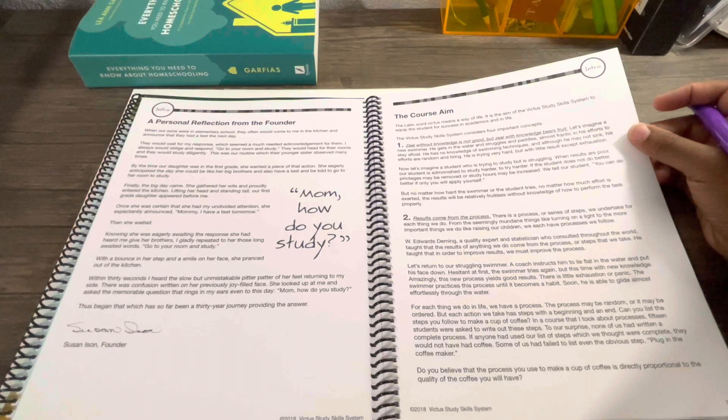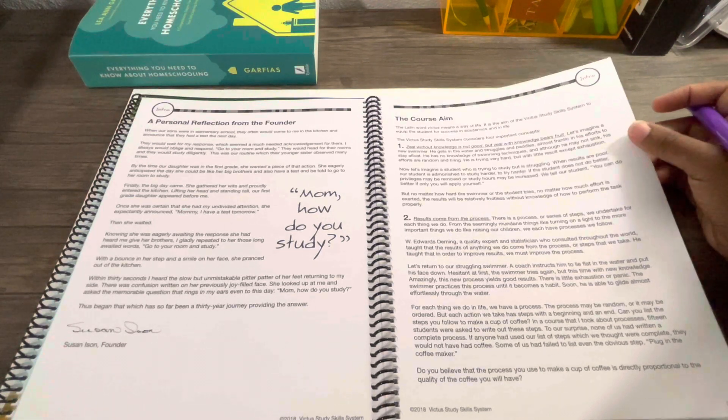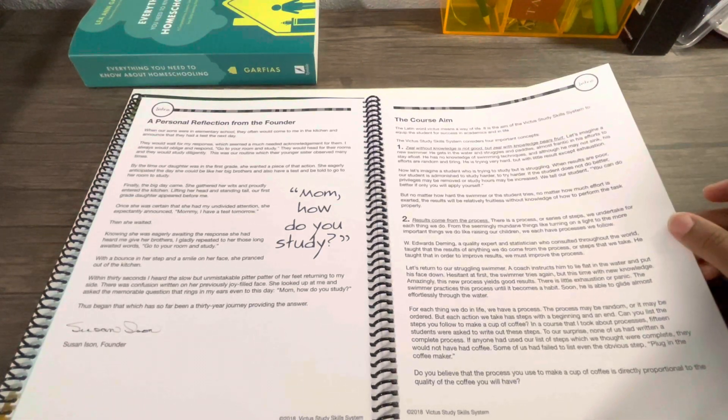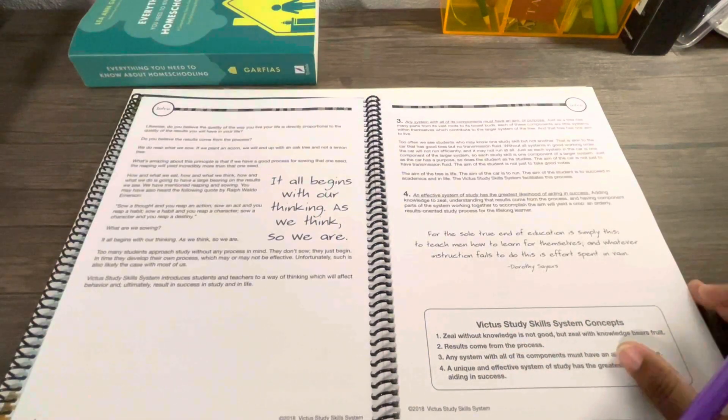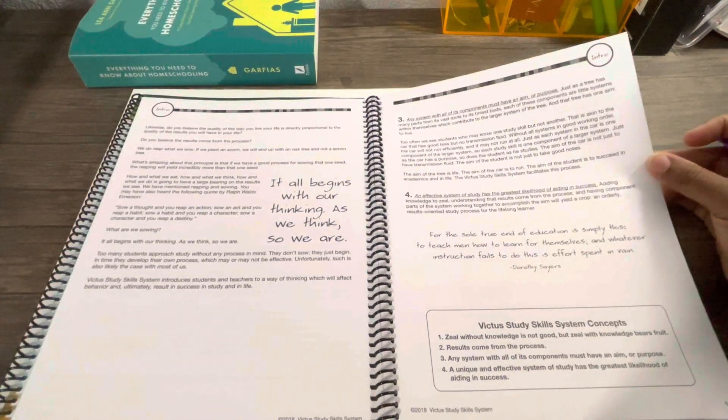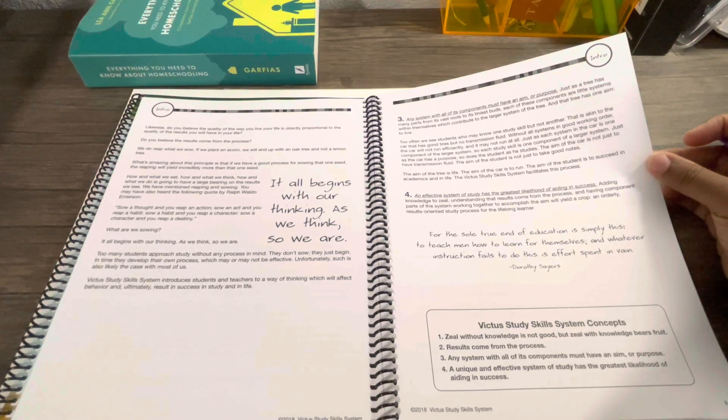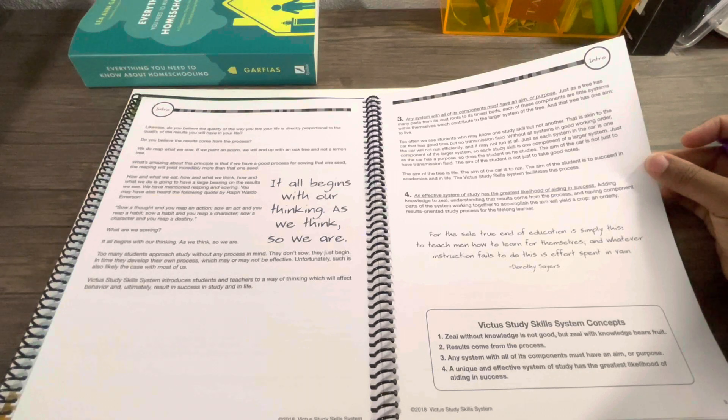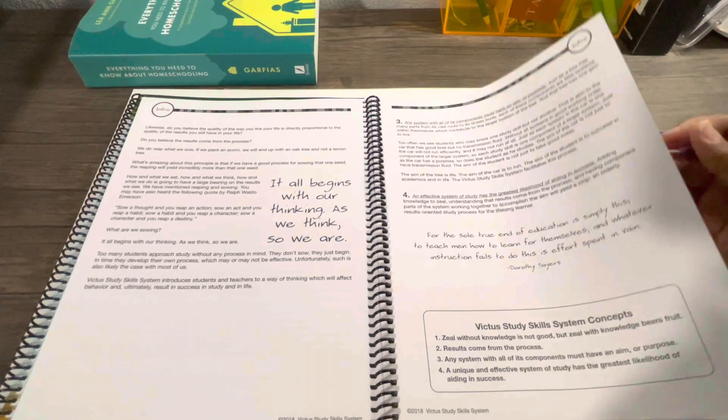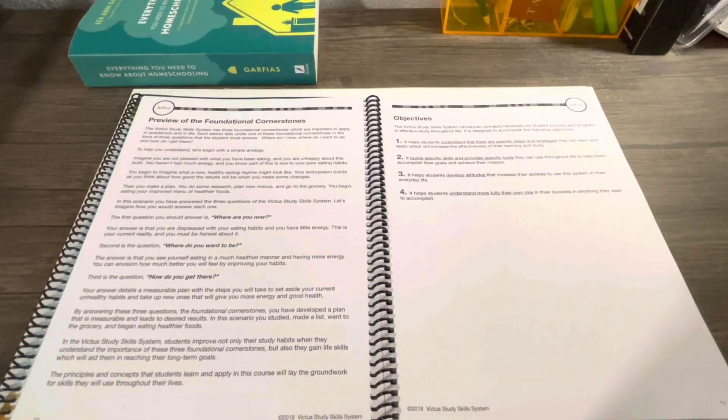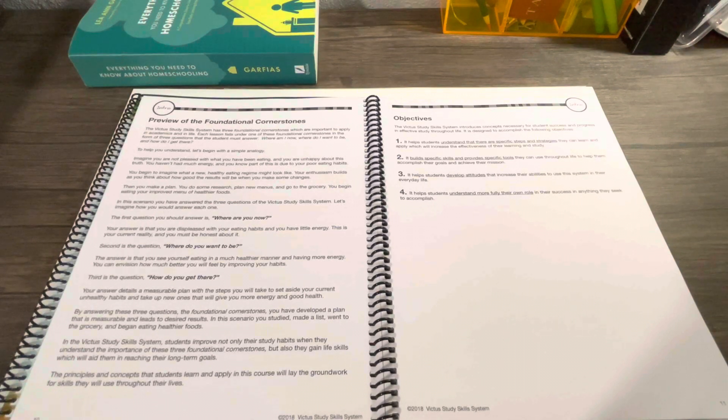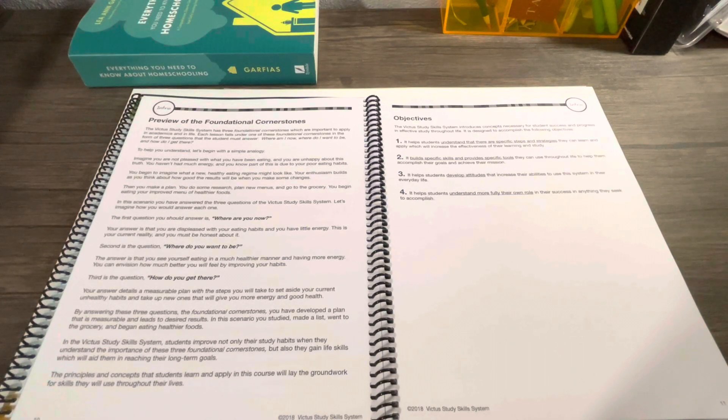It says number one, zeal without knowledge is not good, but zeal with knowledge bears fruit. Number two says results come from the process. Number three says any system with all of its components must have an aim or purpose. Number four says an effective system of study has the greatest likelihood of aiding in success.